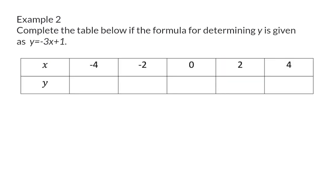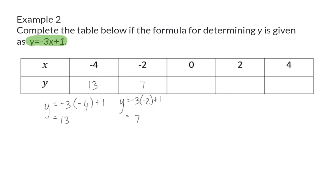Example two: complete the table below if the formula for determining y is given as y equals three times the input value plus one. Once again I will determine my output values by substituting the input values one at a time. First I substitute minus four, which gives me negative 12 plus one, which is negative 11. We continue by substituting negative two, zero, two, and four to determine the output or y values.